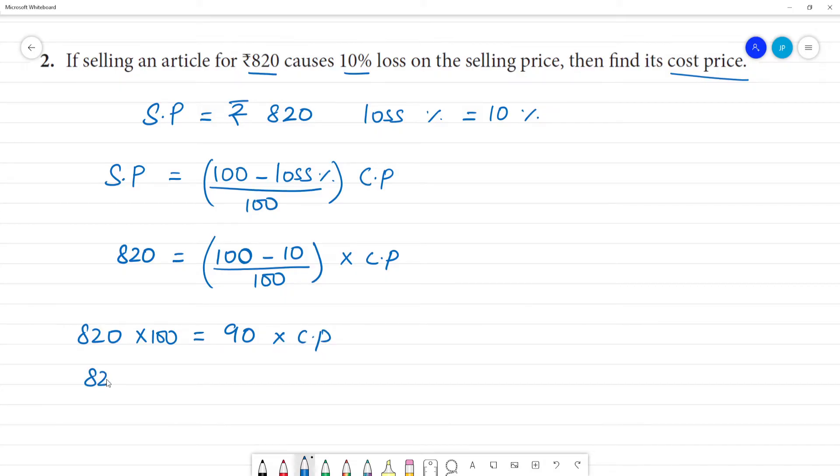Now, 820. So, this is 820 into 100 by 90 is equal to CP. So, if we cancel. Now, we can write. The 0 and this 0 cancels. Now, we can write. 8200 divided by 9, which is equal to CP.